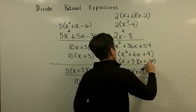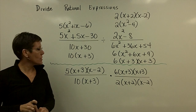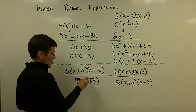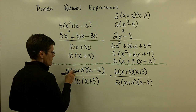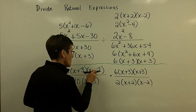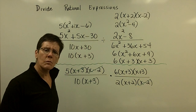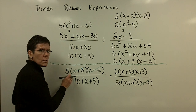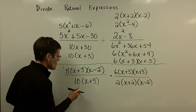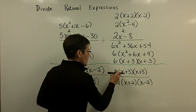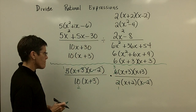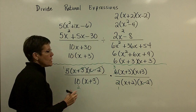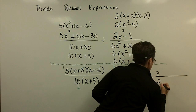Everything has been factored and I've multiplied by the reciprocal. Now reduce: x plus three cancels here, and x minus two cancels here and here. I always look at binomials first. For the numerical factors, five and ten reduce to one half, and two goes into six three times. So I have one times three equals three upstairs and two times one equals two downstairs.